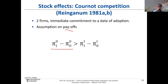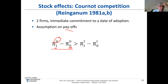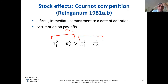We make an important assumption on payoffs. Using the notation: π₁⁰ means I use the new technology while my rival still uses the old. The superscript denotes the rival's technology. The key assumption is: if I'm the first adopter my profit gain is higher than if I'm the second adopter, because then my rival already uses the new technology. This assumption is natural in Cournot and also holds under Bertrand in a degenerate way.